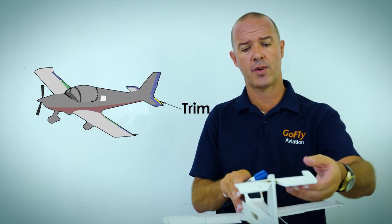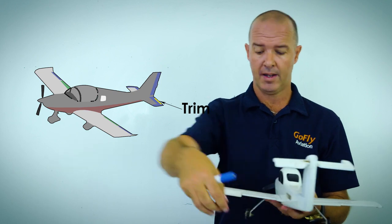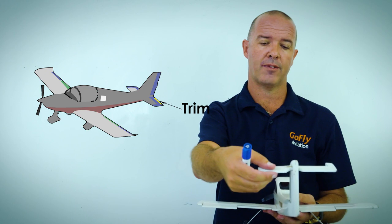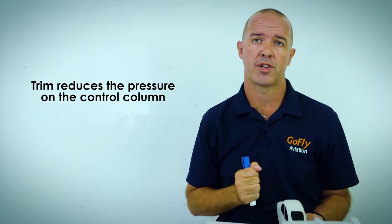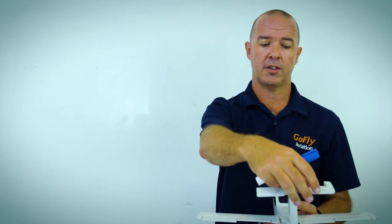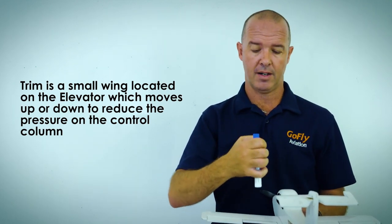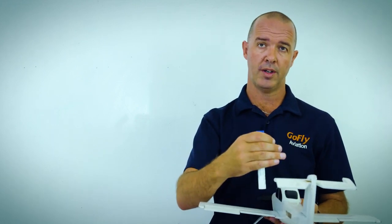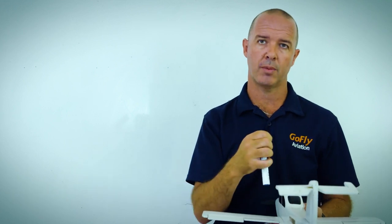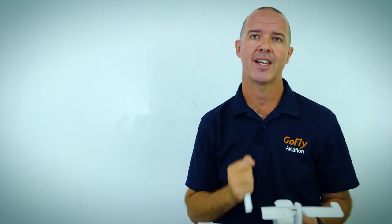We also have what we call our trim. Our trim is generally situated on the elevator, though the trim can be on the elevator, rudder, and ailerons — but that's mainly for larger aircraft. For training aircraft, we generally only have a trim on our elevator. The idea of the trim is just to reduce the control column pressure for the pilot. The trim is a little wing situated on the back of the elevator that moves up and down, and the pilot has a control in the aircraft to move this trim tab up and down. For instance, if you're in a climb and you can feel the control column wanting to move forward, you can use the trim to get rid of that pressure so the control column stays where you want it. We'll go into more detail on how the trim works in real life in our next lesson, which is straight and level.